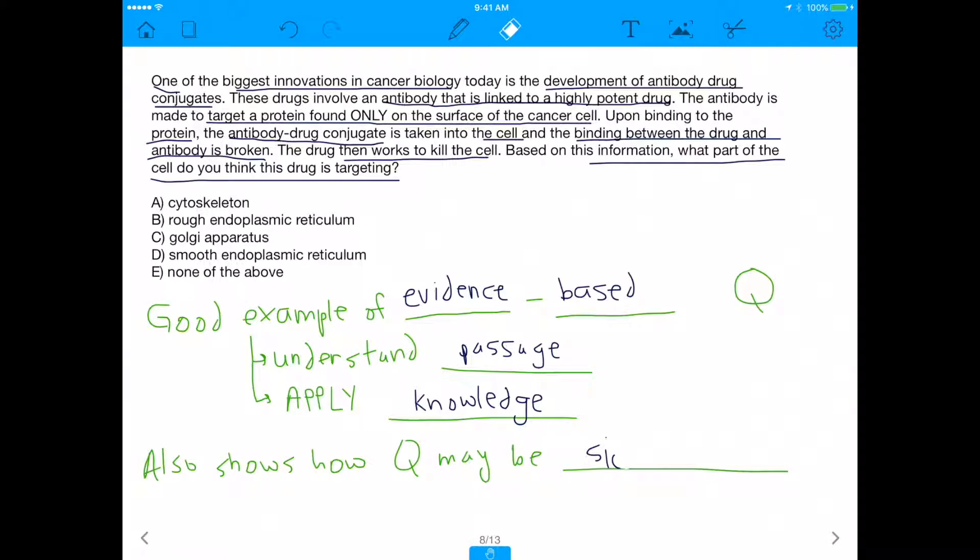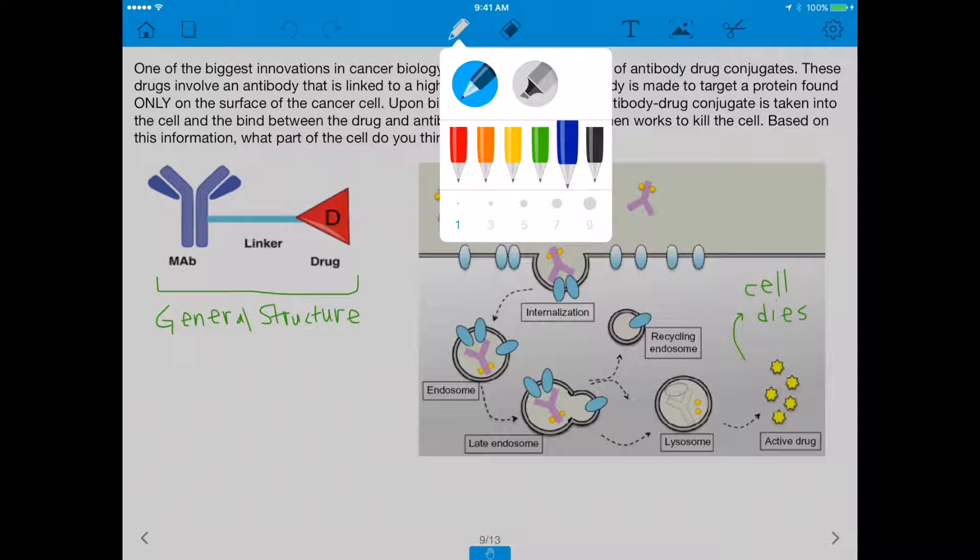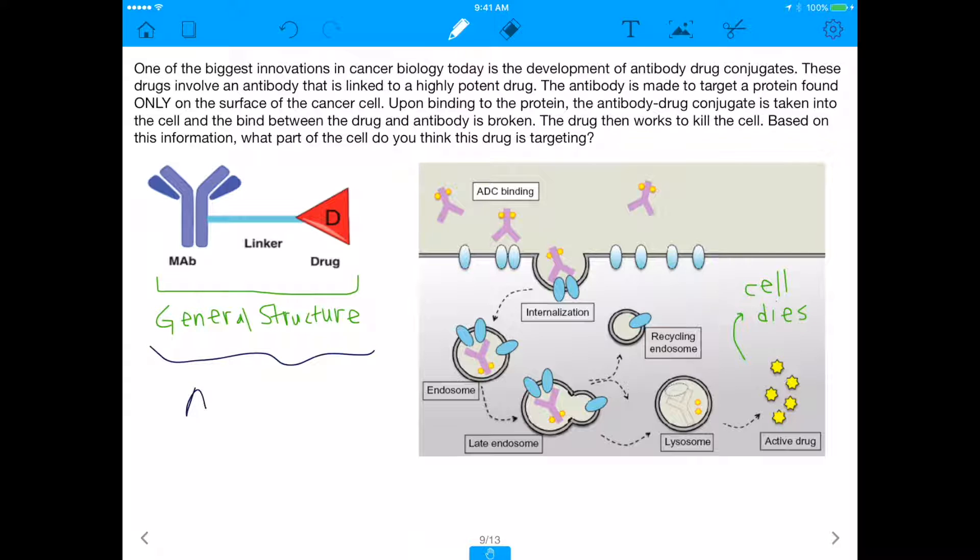But the question itself may be simple because look at our answer choices - these are literally parts of the cell. So the question itself might be simple but the fact that you have to read the passage is what scares people off. Let me just go ahead and show you how you would do this. First of all, you want to visualize what the question is saying. The question is talking about antibody drug conjugates, and here's the general structure of what I'm going to abbreviate as ADC - antibody drug conjugate. So here's the antibody and here's the drug, and they're linked together by a linker.